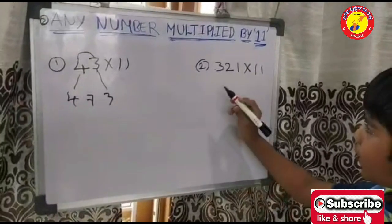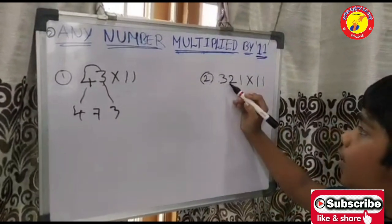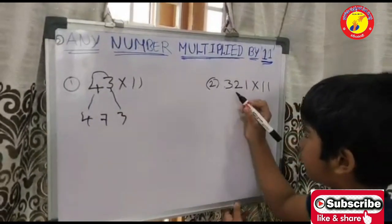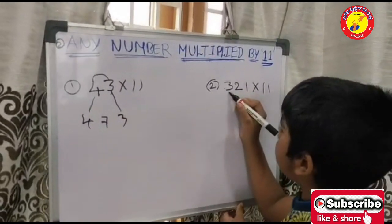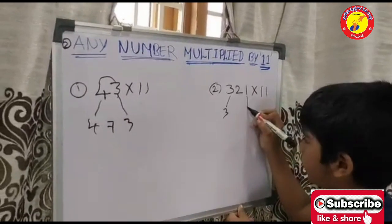Now, I will tell the second example. The number is 321 into 11. Now, I will write 3 here. And 1 here.